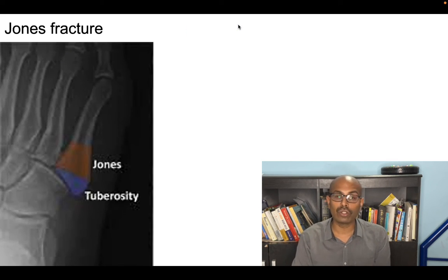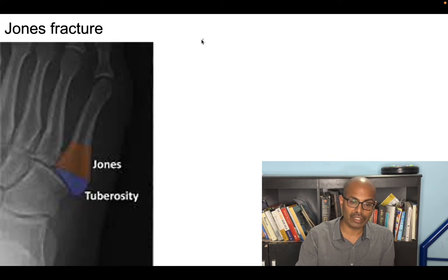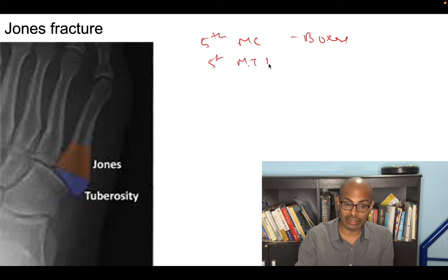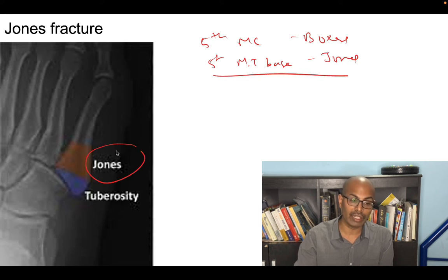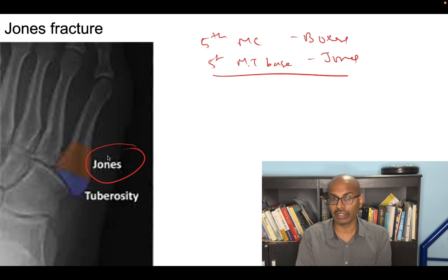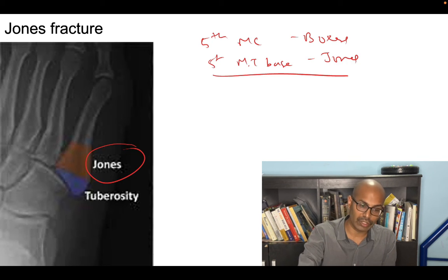Jones fracture is a fracture of the base of the 5th metatarsal — not to be confused with boxer's fracture, which is the 5th metacarpal neck. Jones fracture is significant because this area has a poor blood supply and a decreased rate of union, making it clinically important.